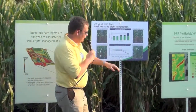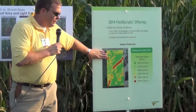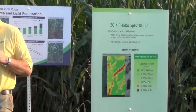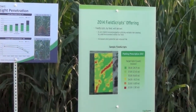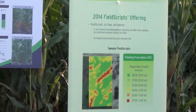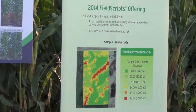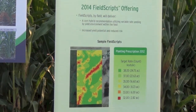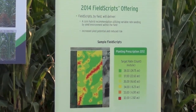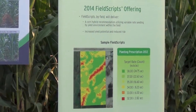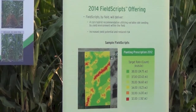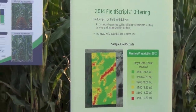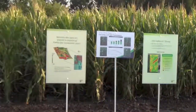Finally, as Tracy showed, our prescription is 10 by 10 meter specific, hybrid specific, and field specific — essentially getting to that potential productivity on every acre. Thank you.